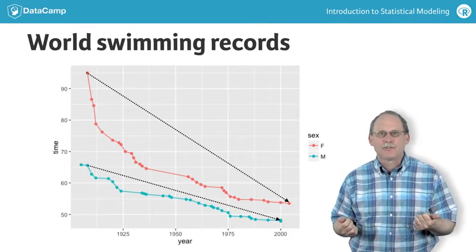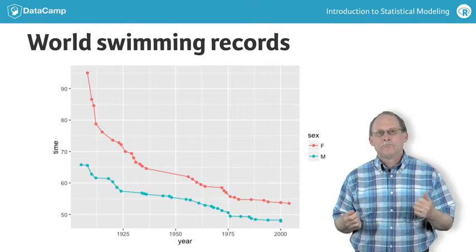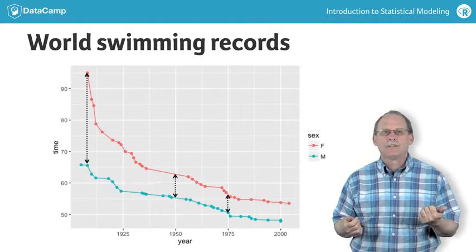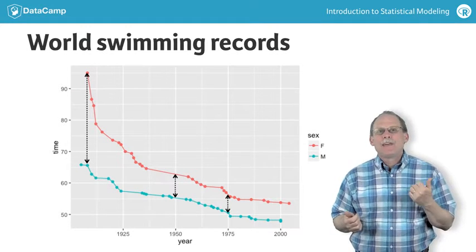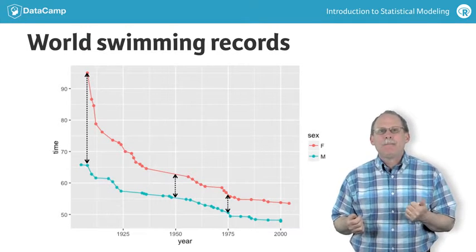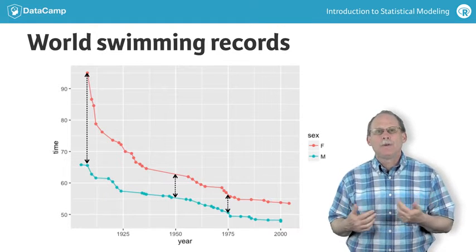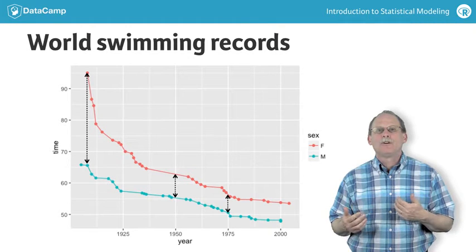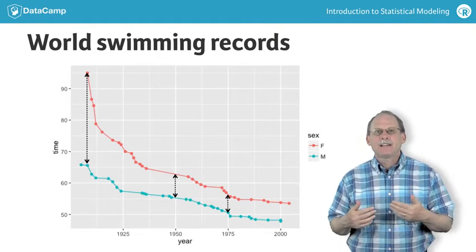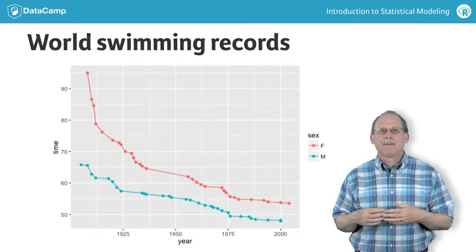First, swimmers have gotten faster over the years. Second, men's records are faster than women's. And even without formally training a model, you may be able to see that the effect size of sex, the difference between men and women, has gotten smaller over the years. That change in effect size is an interaction effect.